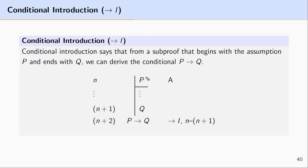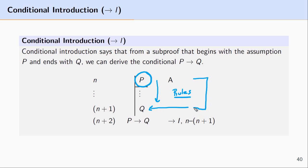Take a look here. What we have is an assumption right here — we assumed P. Then through using the deductive apparatus, that is using our various derivation rules, we under this assumption reason to Q. Once you've made this assumption and then derived a particular formula, you can derive a conditional from this entire sub proof where the antecedent is the formula you assumed and the consequent is the formula you derived in the sub proof.